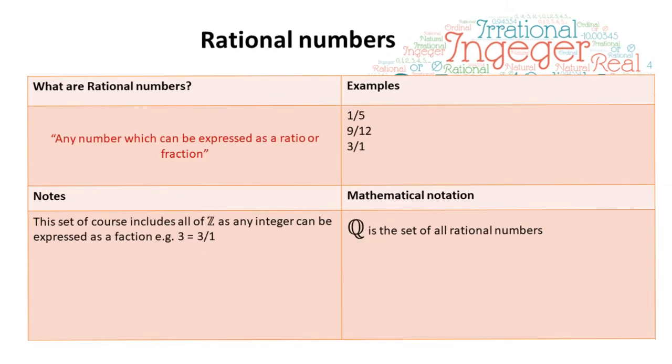Next, we have rational numbers. Now, any number which can be expressed as a ratio or a fraction, such as one fifth, is considered a rational number. The mathematical notation Q is used to represent the set of all rational numbers. And of course, the set Q includes all of Z integers, because we can express any whole number, e.g., 3, as a ratio or fraction, 3 over 1.